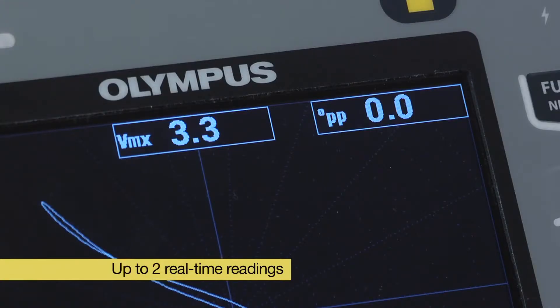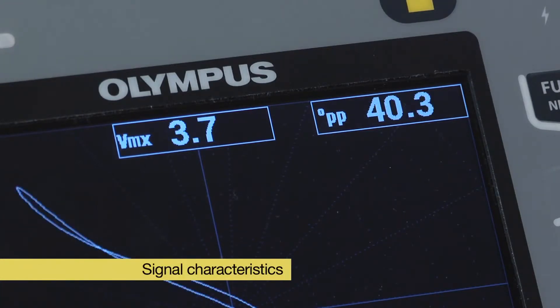Additionally, up to two real-time readings can show various characteristics of the signals such as its speed amplitude, phase angle and a selection of other configurable readings.